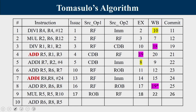The next instruction is a multiplication. Since the first multiplication completed by cycle 7, there is no structural hazard. It is issued at cycle 17. R5 was produced at cycle 12 and is available in the reorder buffer; R10 is in the register file. Execution starts at cycle 18, runs 4 cycles through cycle 21, CDB write-back at cycle 22, and commit at cycle 26.